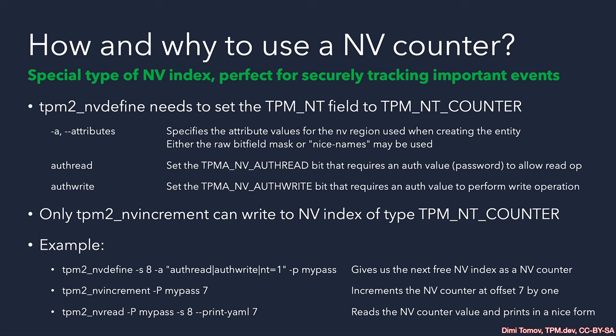The NT field specifies the type of the NV index: a value of 0 is the ordinary type for bulk write operations, and a value of 1 indicates an NV counter, which can only be incremented using the special command tpm2_nvincrement. You can refer back to the table to see all the different values. Remember that the size of an NV counter is limited to 8 bytes — this is also important when performing the NV Define operation, as shown by the dash-s 8 parameter specifying 8 bytes.